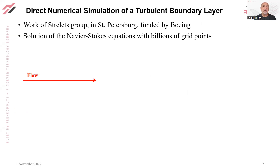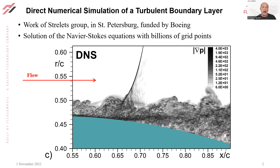First I'll show you a direct numerical simulation of a boundary layer. It's work with Strelitz, funded by Boeing. It's a solution of the Navier-Stokes equations with resolved grid points. The flow is coming from the left, and we have a boundary layer that was made turbulent. You see what we call eddies, vortices, structures, vortex loops, and all that, that are tumbling. The eddies are much smaller near the wall than in the outer part of the boundary layer.